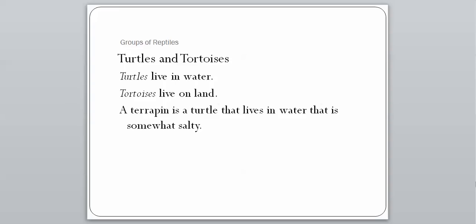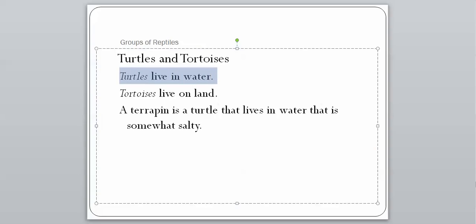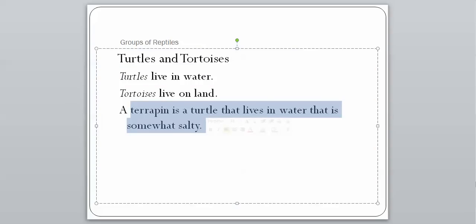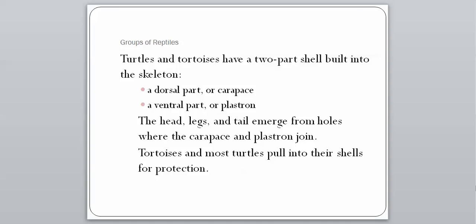Our next group is turtles and tortoises. Turtles live in water and tortoises live on land — that's the key difference. A terrapin is a turtle that lives in somewhat salty water. Turtles and tortoises are famous for their two-part shell built into their skeleton: the dorsal part is called the carapace, and the ventral part is called the plastron. The head, legs, and tail emerge from holes where the carapace and plastron join. Some turtles can pull themselves all the way in for protection, while aquatic species cannot pull themselves completely in.